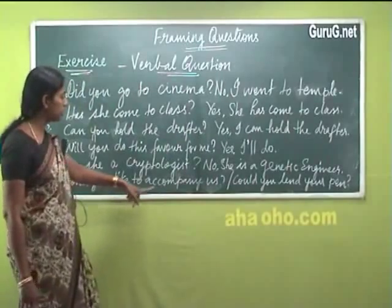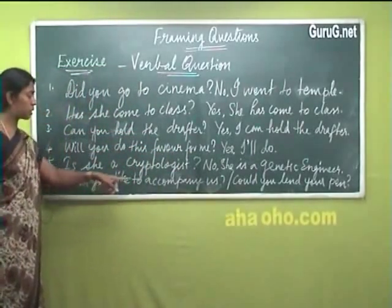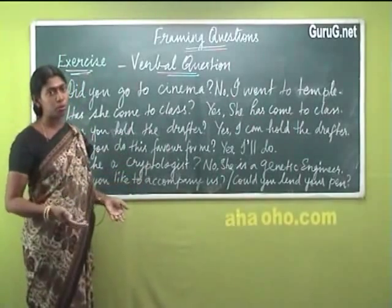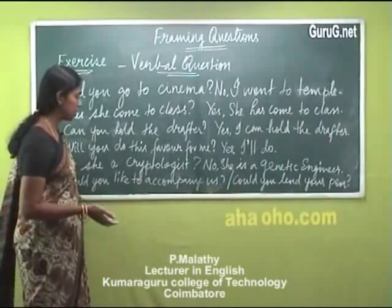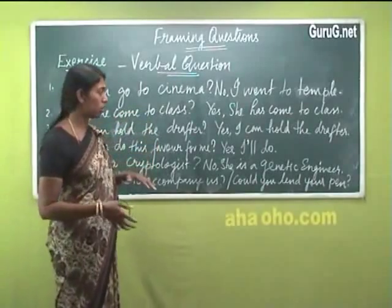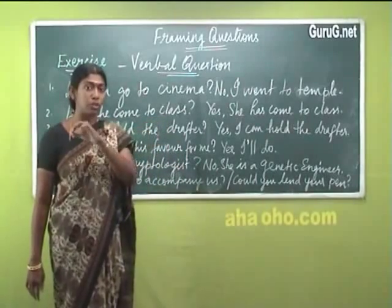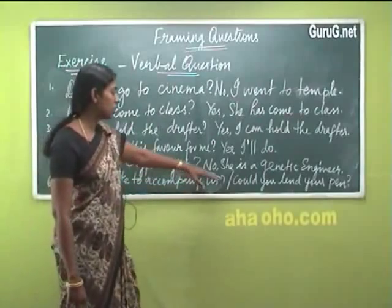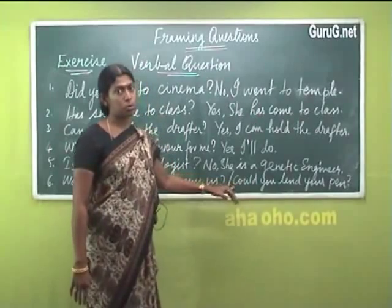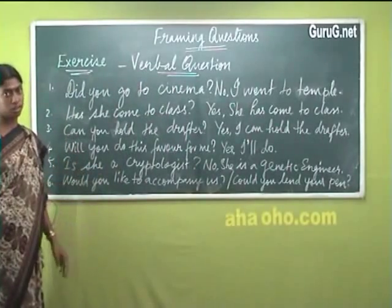'Would you like to accompany us?' — when the person is not known to you or is older than you, you would like to be polite, so you use 'would.' For example, in job applications you write 'I would like to apply for this post' to give a polite tone. 'Could you lend your pen?' — same situation. The usage of 'could' and 'would' at the beginning of verbal questions gives politeness to the tone.